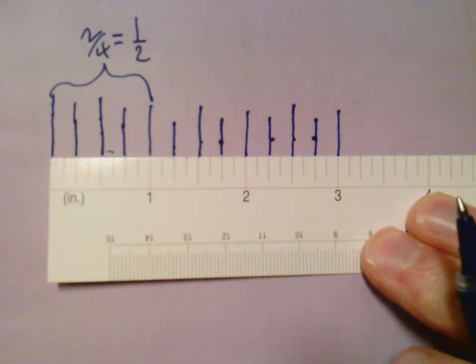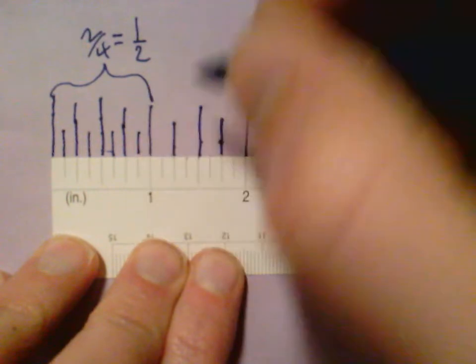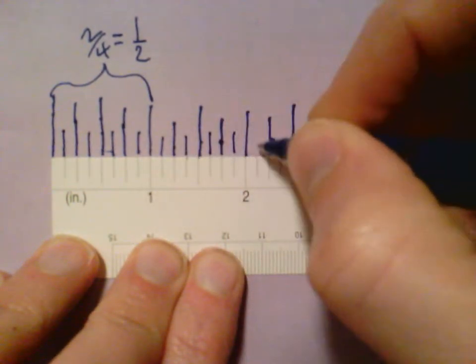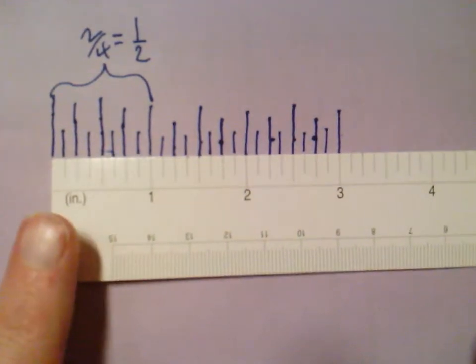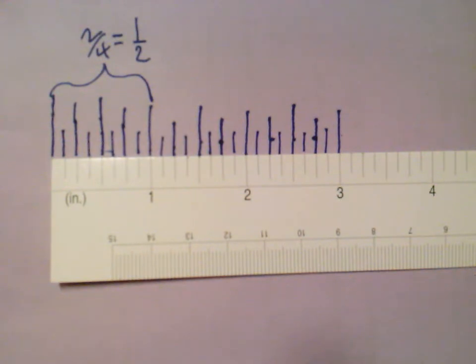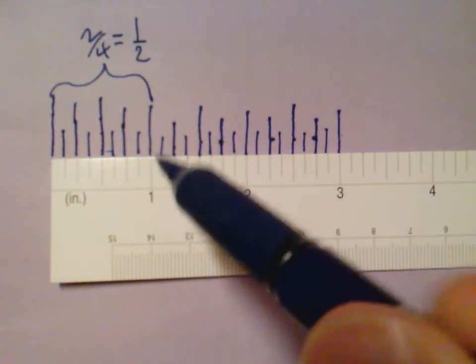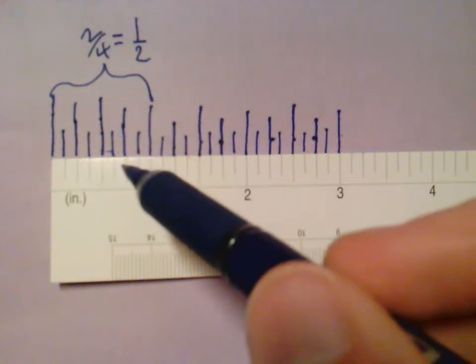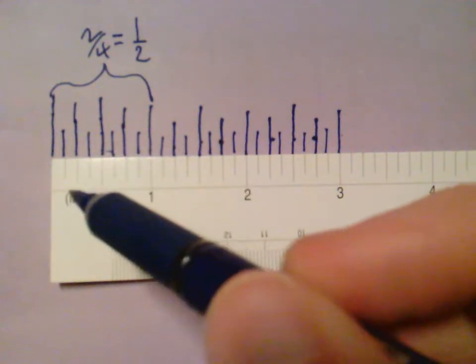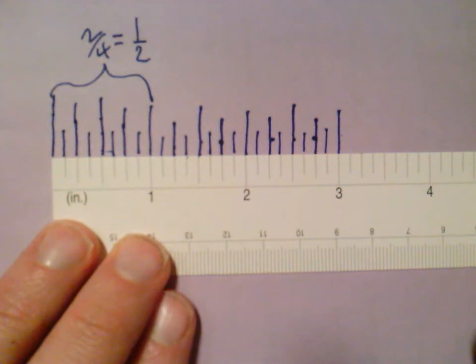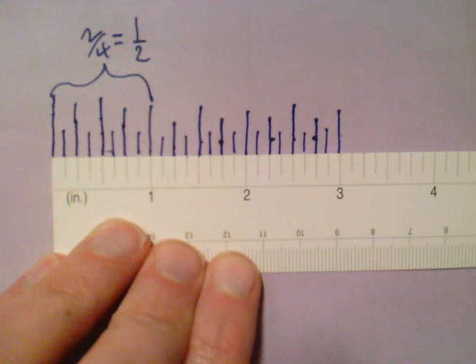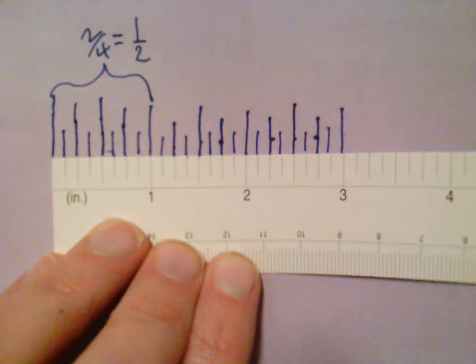The final, smallest lines on our ruler are the eighth-inch lines. These split all those quarter-inches in half, dividing the inch into eight parts. These eighth-inch lines are important because they will help us measure to the nearest quarter-inch, which is our goal today. So: longest lines are inch lines, second-longest are half-inch lines, third-longest are quarter-inch lines, and shortest are eighth-inch lines. Some rulers go down to sixteenths, thirty-seconds, or even sixty-fourths of an inch, but our rulers only go down to eighths.